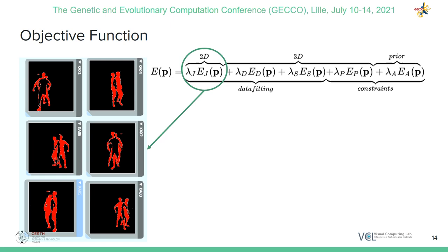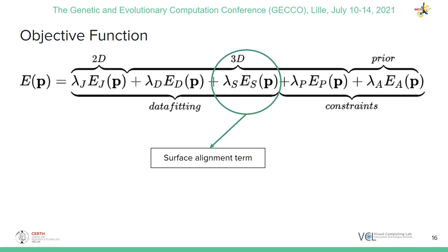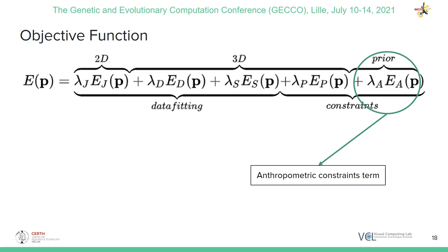The first error term measures silhouette difference between 2D rendered projections of the two meshes from a set of predefined viewpoints. The second term measures the distance from the animatable template to the target mesh, by aggregating distances between the vertices of the animatable template and their closest vertex in the target mesh. Third, a surface alignment term penalizes inconsistent closest point associations between vertices of the two meshes. Finally, a term penalizes poses that result in self-intersections of the animatable template.